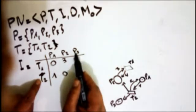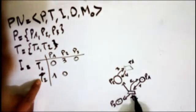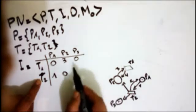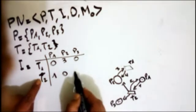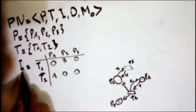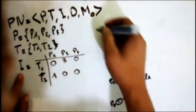For P3 to T2, there is no input from P3 to T2, so we write 0. That completes the input matrix I.